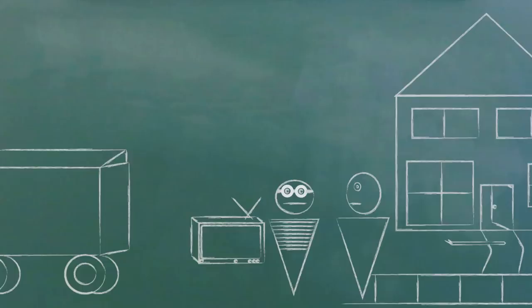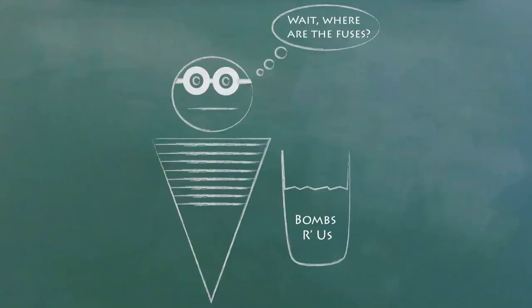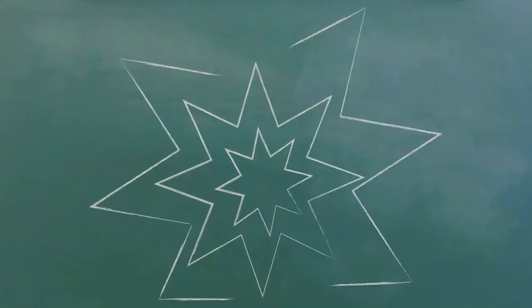The second thing you need to be an accessory is to aid in the crime, either before or during. You don't actually have to commit it, just aid the person who does commit it. You could buy the supplies. Or you could drive the getaway car.